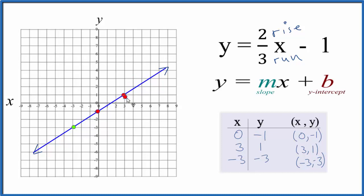We can go from there, rise one, two, and go over one, two, three. That's on the line. We can even go in the opposite direction. From the y-intercept, go down one, two, and over three to the left. That's on our line as well.